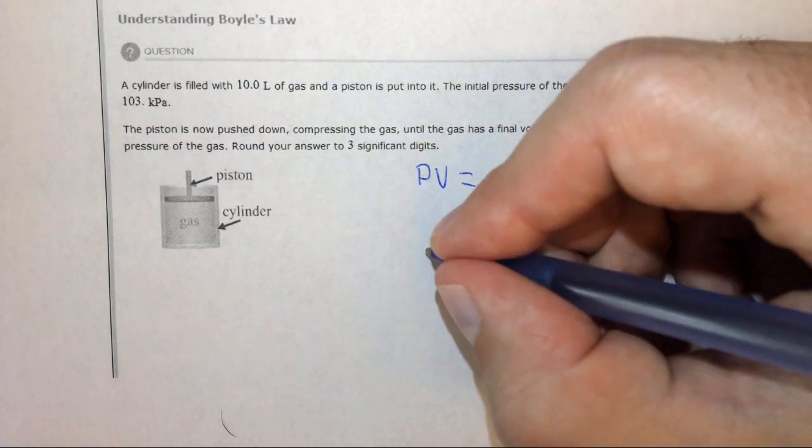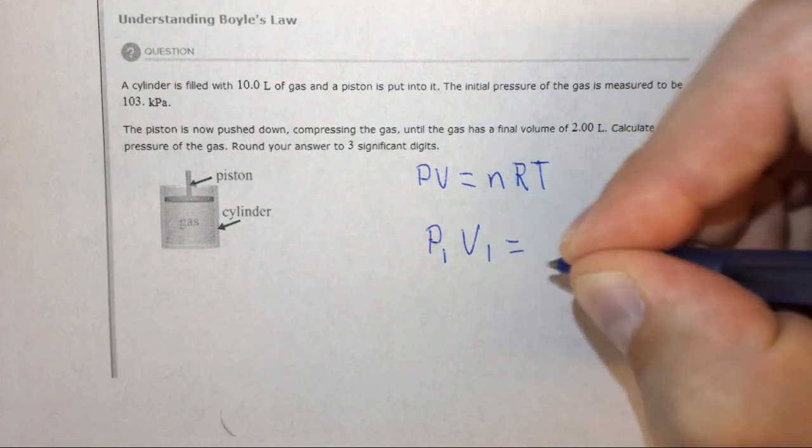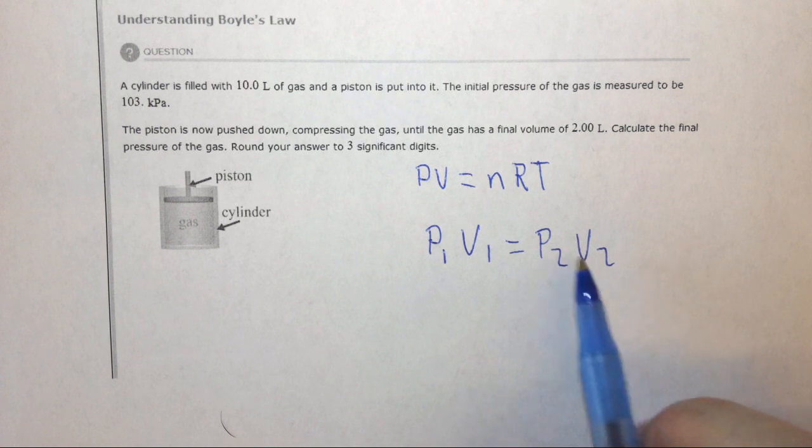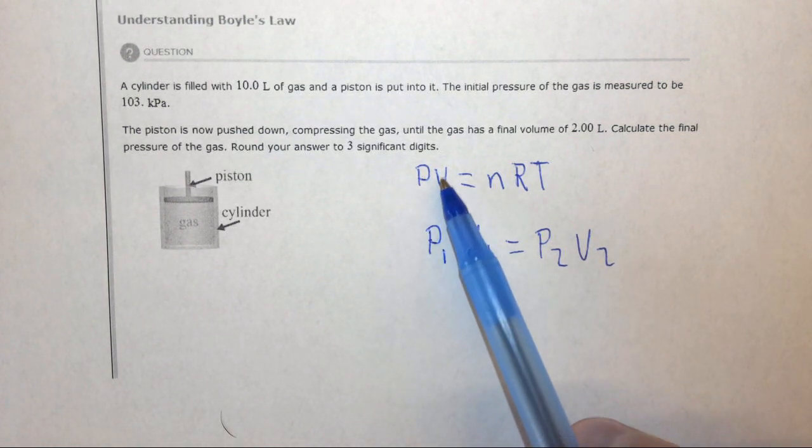We can write this relationship mathematically as P1V1 equals P2V2. This is an inverse proportionality because they're on the same side of the equation.